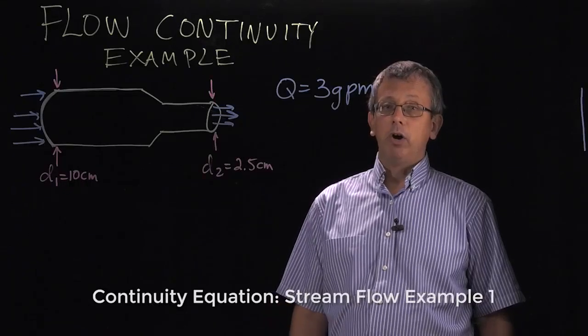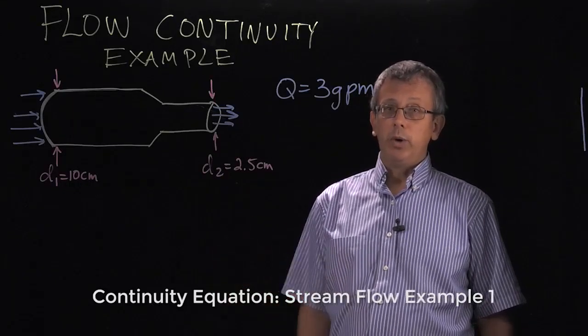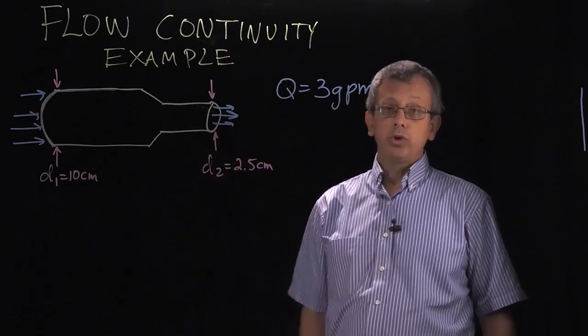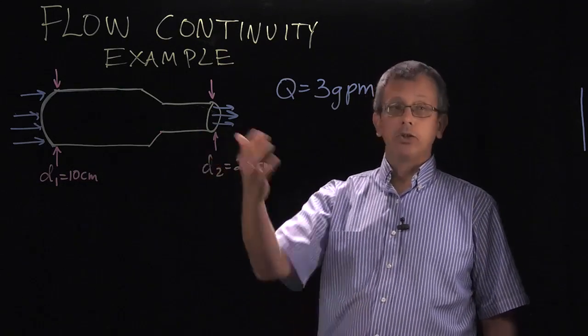Let's consider an example of our flow continuity equation. In this case, we have a hose and a nozzle on the end of the hose.